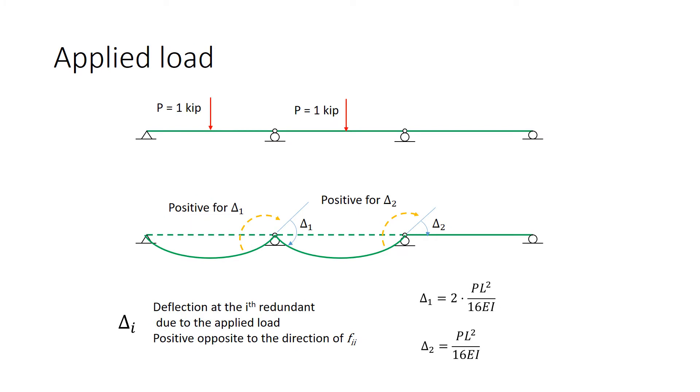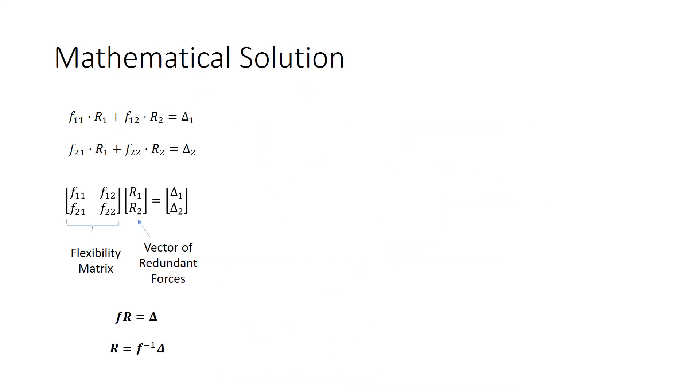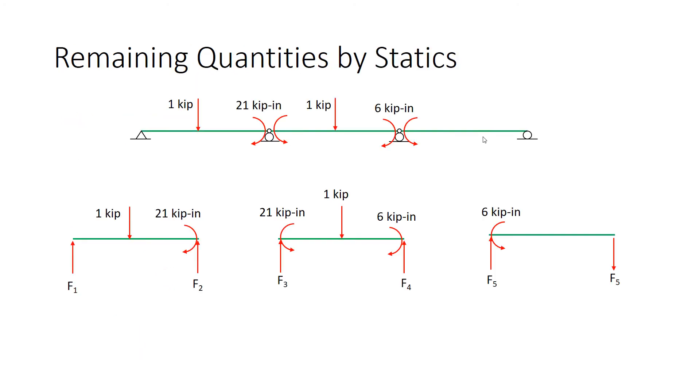We also looked at the applied load. We defined the term delta, the deflection at the i-th redundant due to the applied load. The positive sign convention was opposite to the sign convention for the redundant forces. In this case, we found the values of delta by looking at the charts. We enforced compatibility, which means, in general, that the deformations introduced by our releases need to be corrected for so that, in reality, they are not there. In this particular case, the deformation is a discrete change in slope at each of the hinge locations. So we set up equations that enforced a smooth slope at those locations, and then we defined the problem in matrix form.